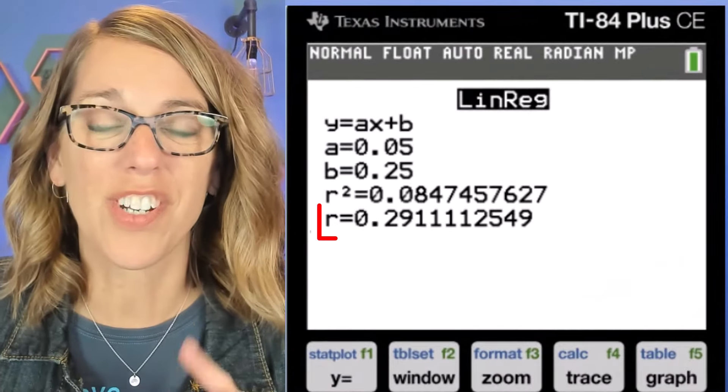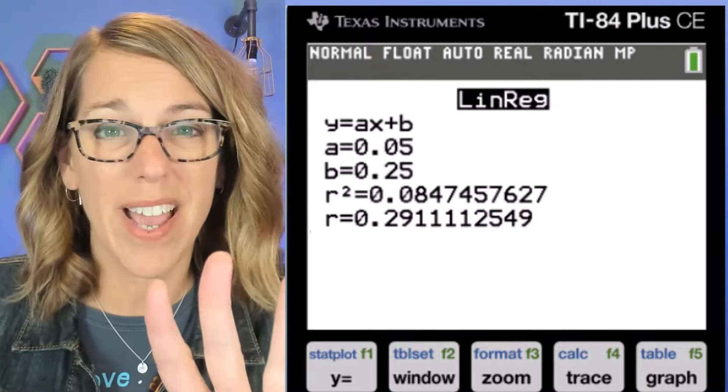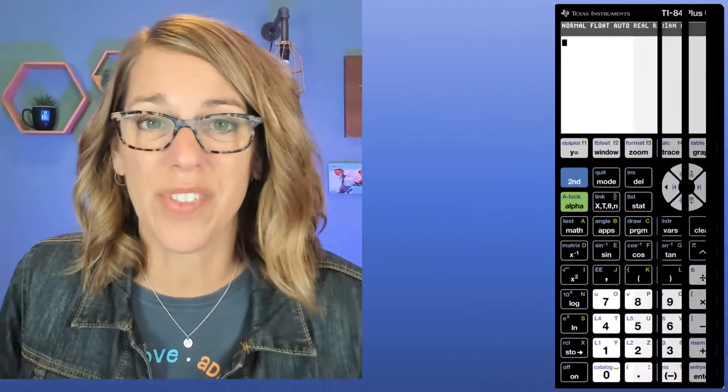To get that R, that correlation coefficient, to show up on your calculator, you can either do it through the mode, but you may not have that option, or you can do it through the catalog.